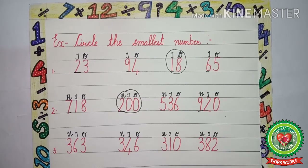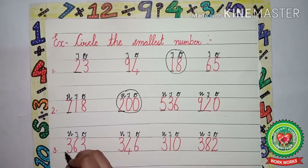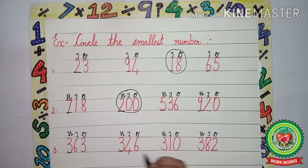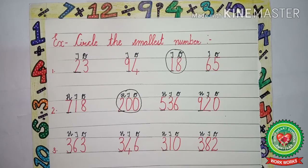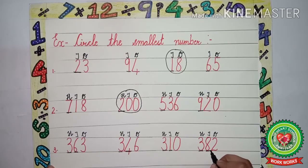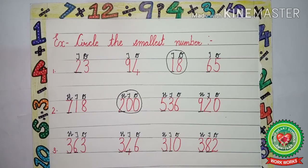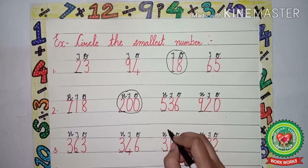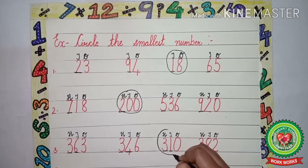We underline the first digit: 3, 3, 3, 3. All numbers are the same, so we will underline the second digit: 6, 4, 1, 8. Among 6, 4, 1, 8, which one is the smallest? 1. It means 310 is the smallest number, so we will circle 310.